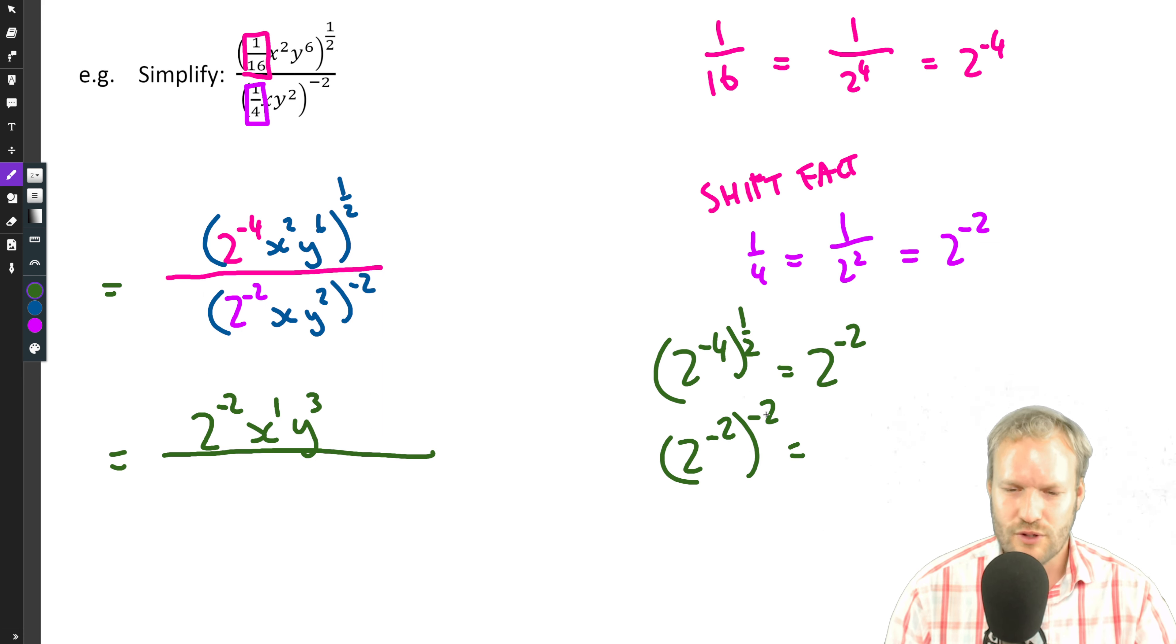Two to the negative two to the power of negative two. Well, again we're just multiplying exponents. The base stays the same, two. And negative two times negative two is positive four, so this will be two to the four.